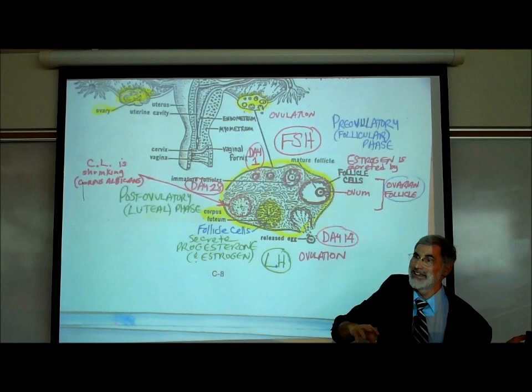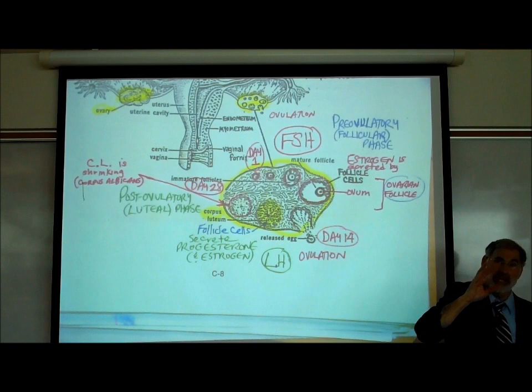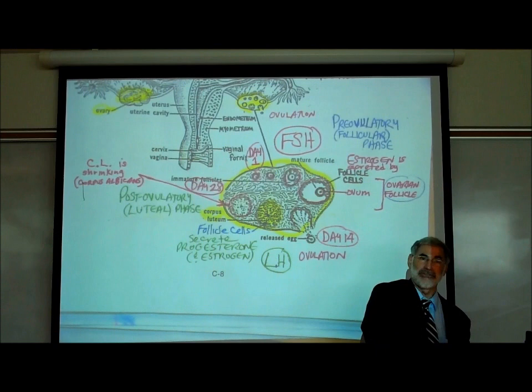Can cells have multiple receptor sites? Of course they can. Any given cell could have many different receptor sites — for dopamine, growth hormone, insulin, FSH, LH, and more. Each hormone activates a different receptor site and causes a different effect.